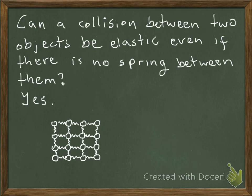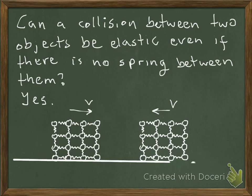A solid object colliding with another solid object can be visualized as a bunch of masses connected by springs. During the collision, some of these springs are compressed; after the collision, they decompress again. The velocities of the objects will differ, but if these springs are ideal — meaning no thermal energy is generated — then the mechanical energy of the system should be conserved.